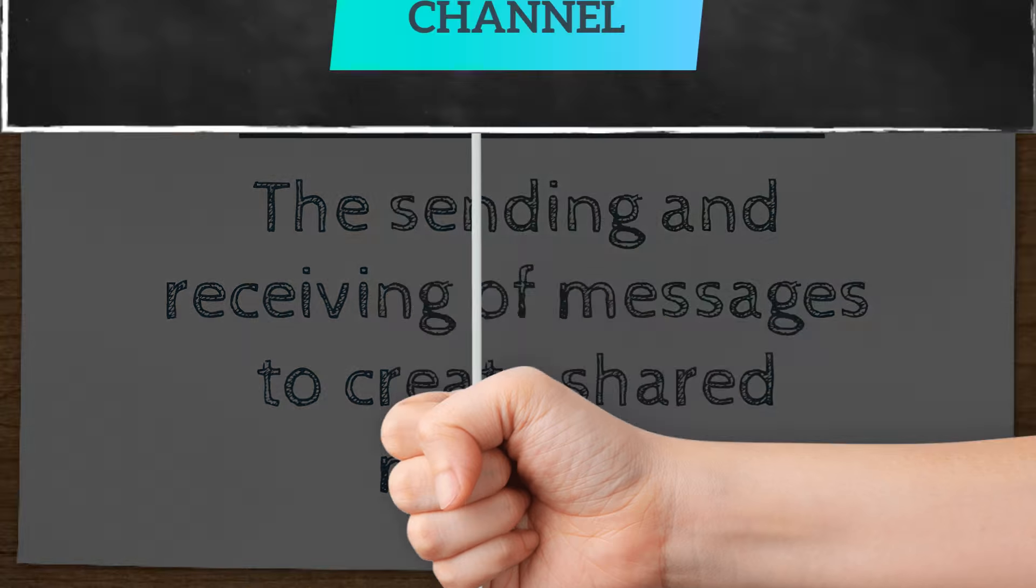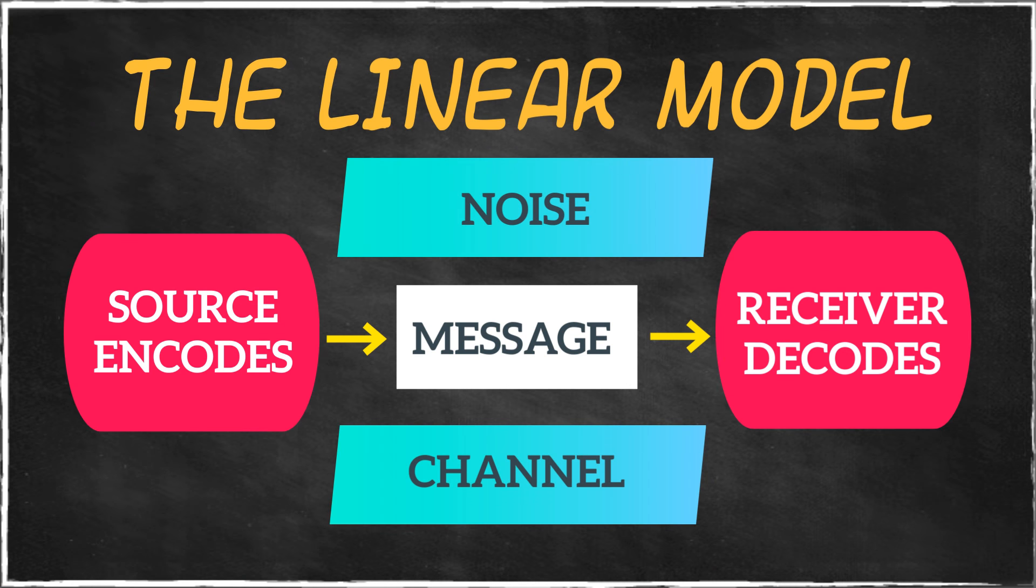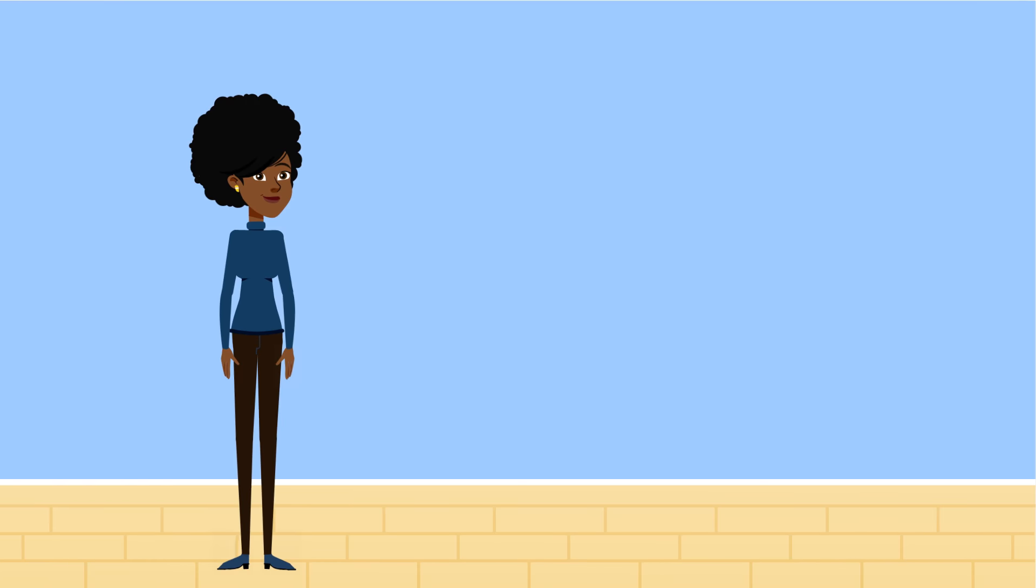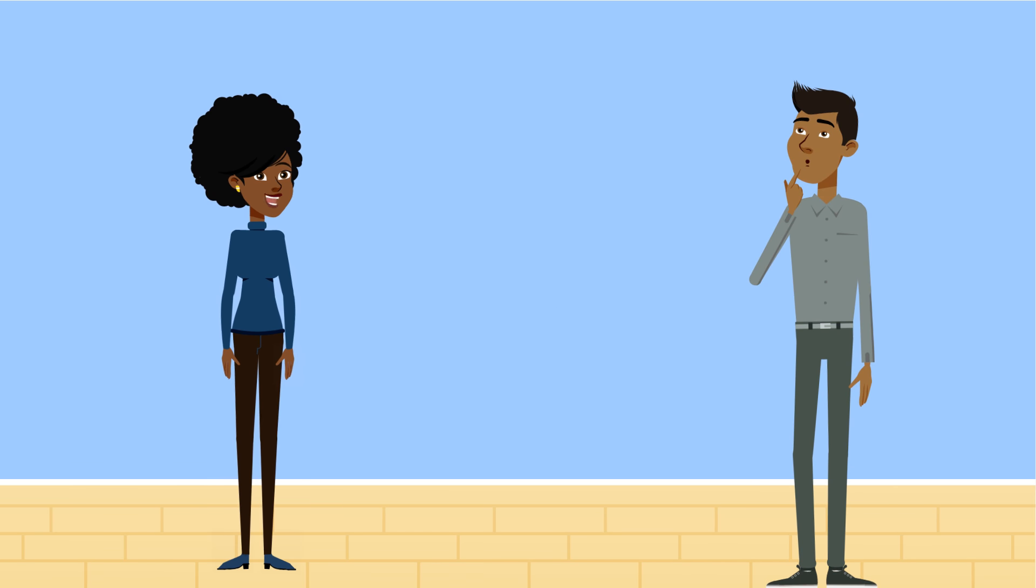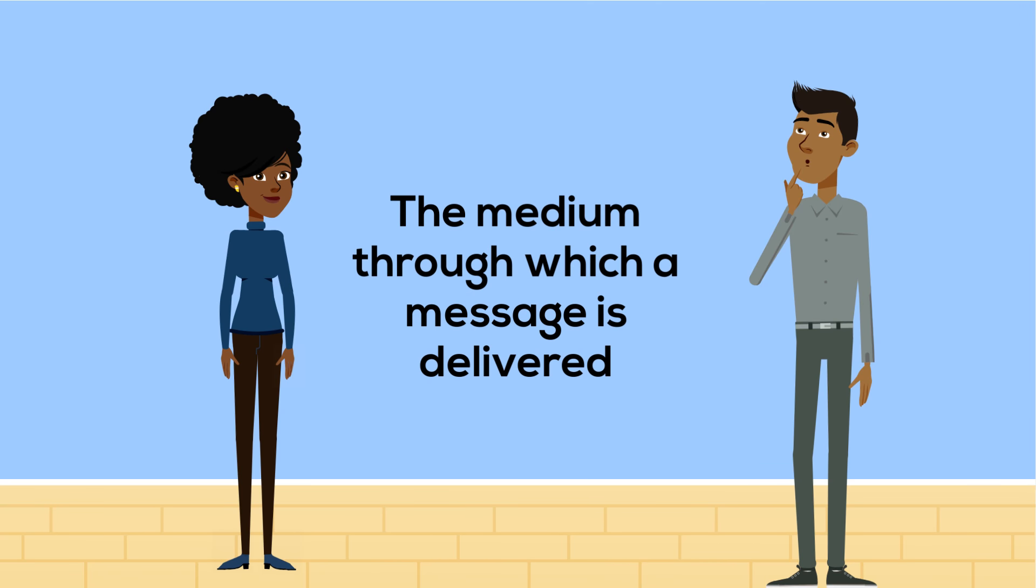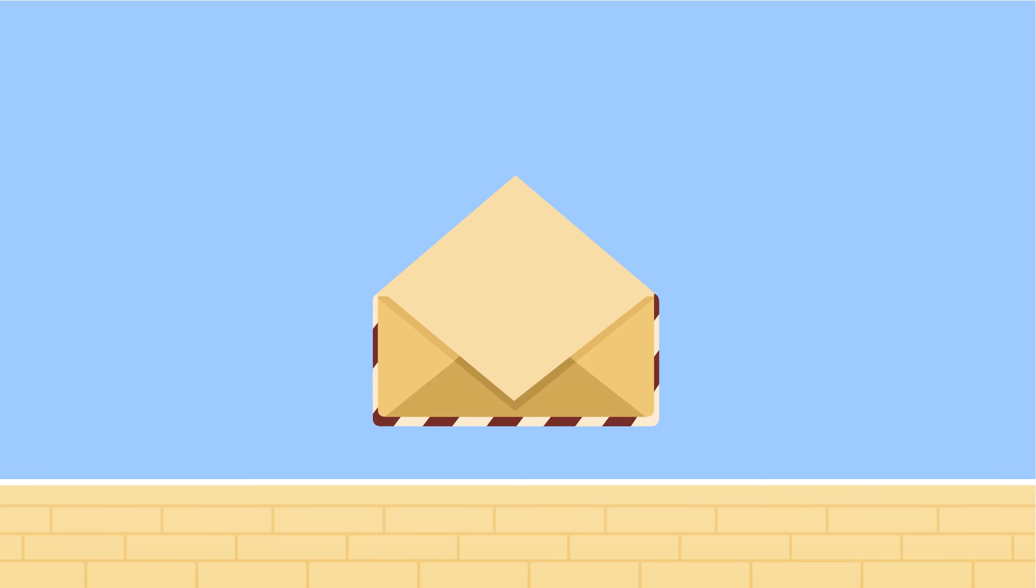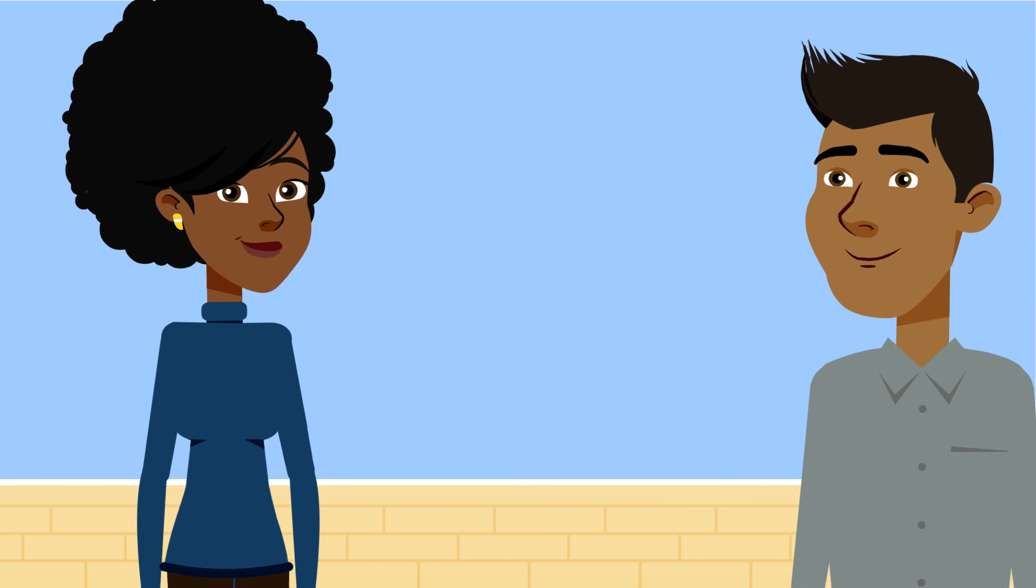The linear model was scholars' first attempt at explaining how this process works. It states, when communicating, a source will encode a message, or take an idea and give it meaning through words, and send it to a receiver through a channel, or the medium through which a message is delivered, such as a phone, computer, handwritten note, or even face-to-face.